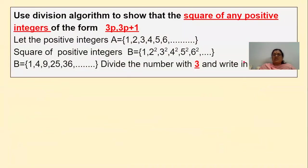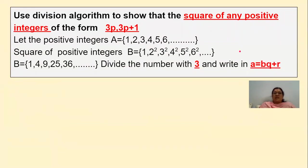Let us take a second problem from your exercise: use the division algorithm to show that the square of any positive integer is in a certain form. The positive integers are 1, 2, 3, 4, 5, 6 and so on. So 1² = 1, 2² = 4, 3² = 9, 5² = 25, 6² = 36. For this problem, divide each number by 3 and write in the form a = bq + r. You will get forms 3p, and 3p + 1.